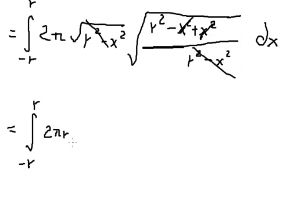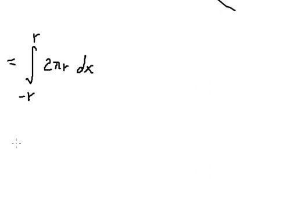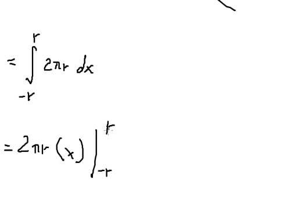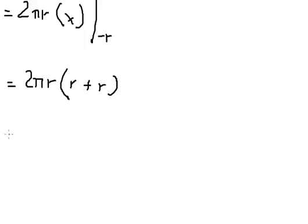These terms cancel and now we just have the integration of x, which gives x. We evaluate with bounds from negative R to positive R, and now we have the final answer. Because we have a negative for the lower bound, negative times negative gives positive, and we get the final answer.